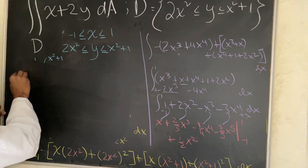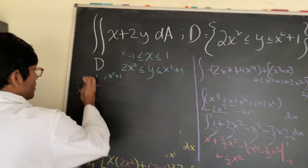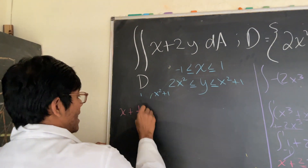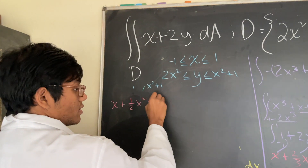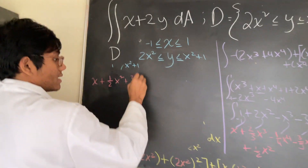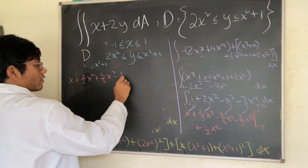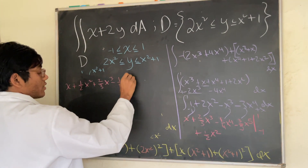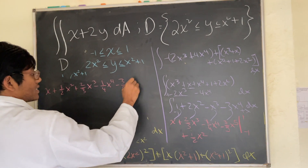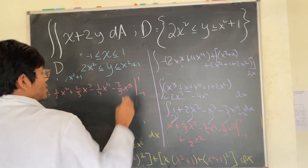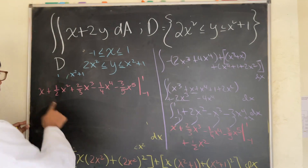Now we integrate term by term: we get x plus one-half x squared plus two-thirds x cubed minus one-fourth x to the fourth minus three-fifths x to the fifth, evaluated from negative 1 to 1.